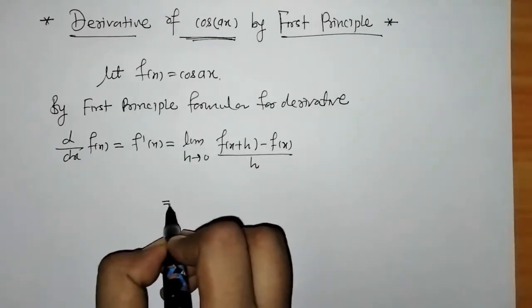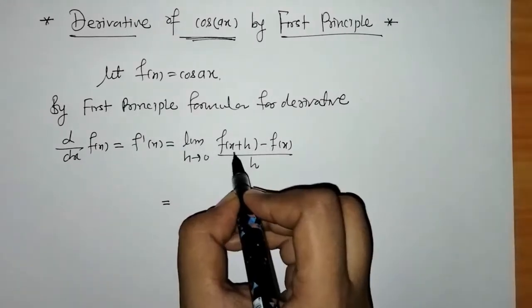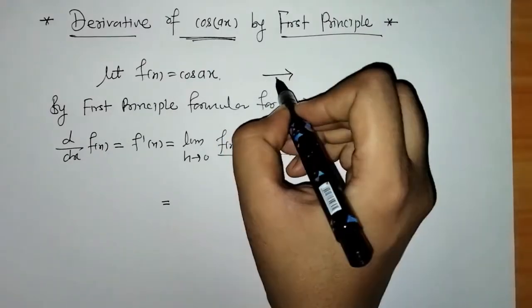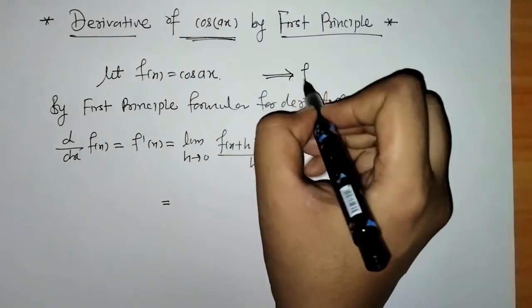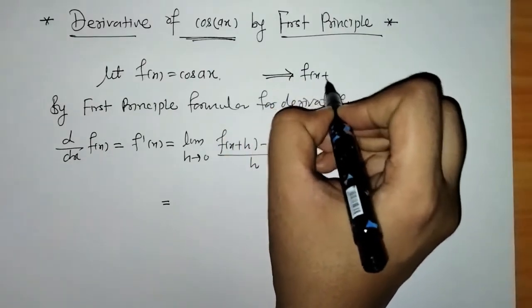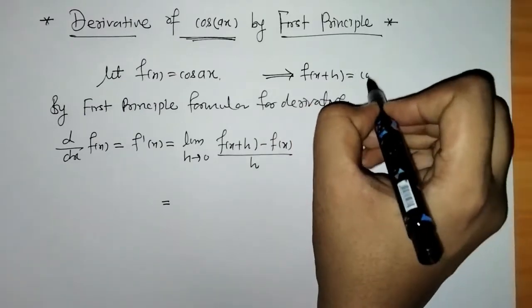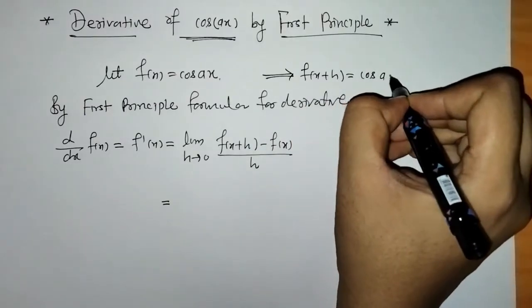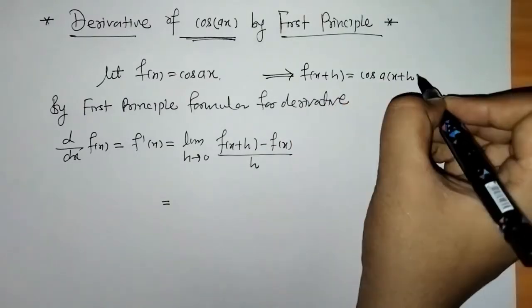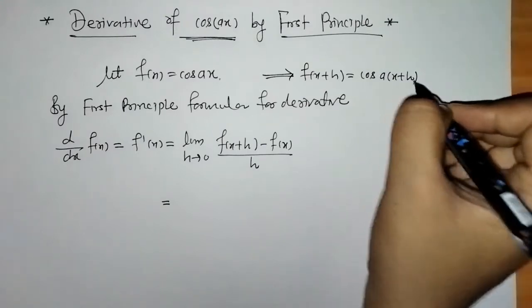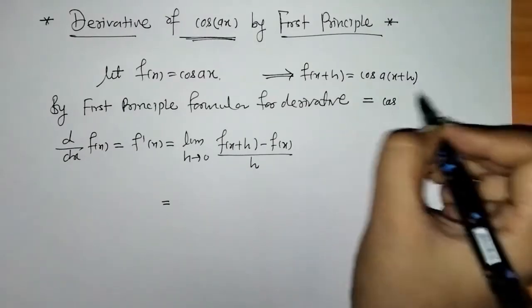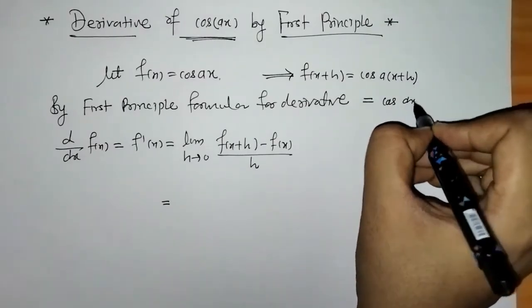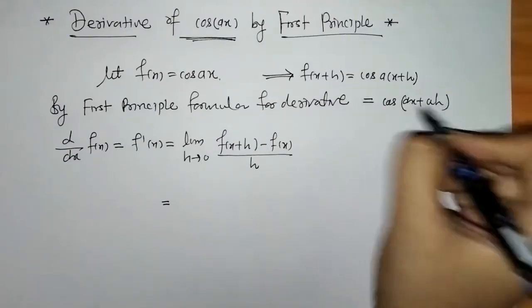So, we need to put f(x+h). From this we will write f(x+h) — what we have to do is replace x by x+h. So here we have cos(ax + ah).